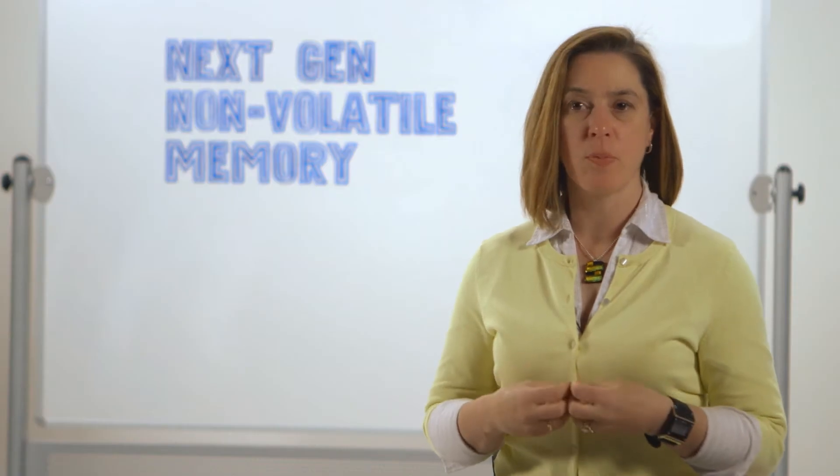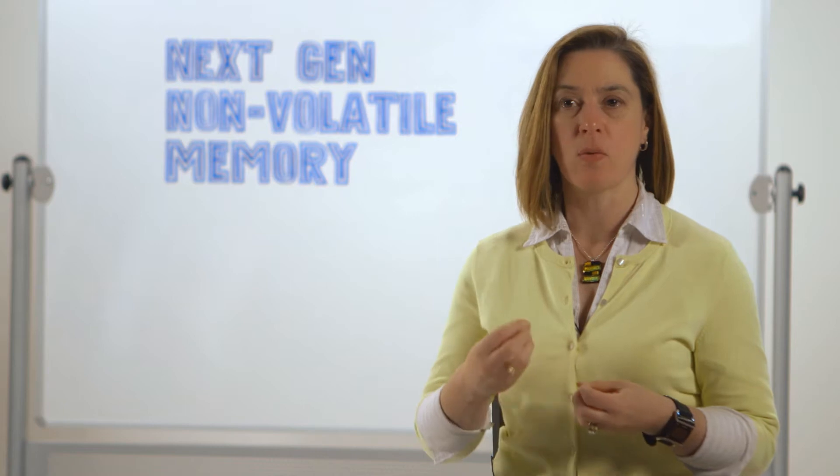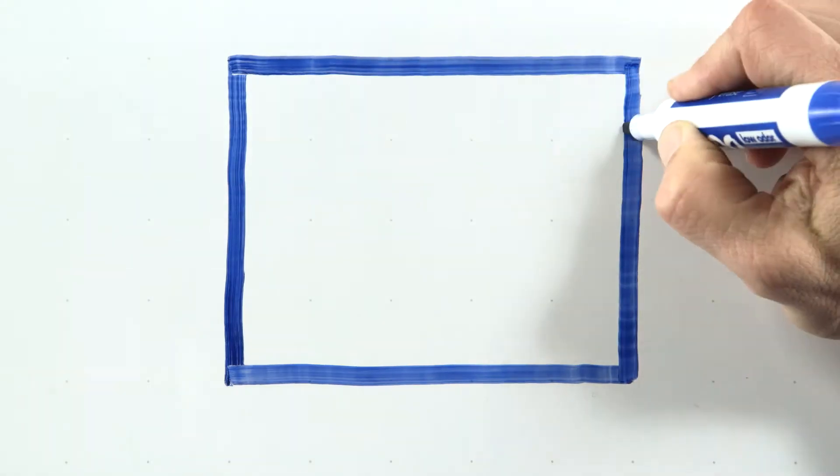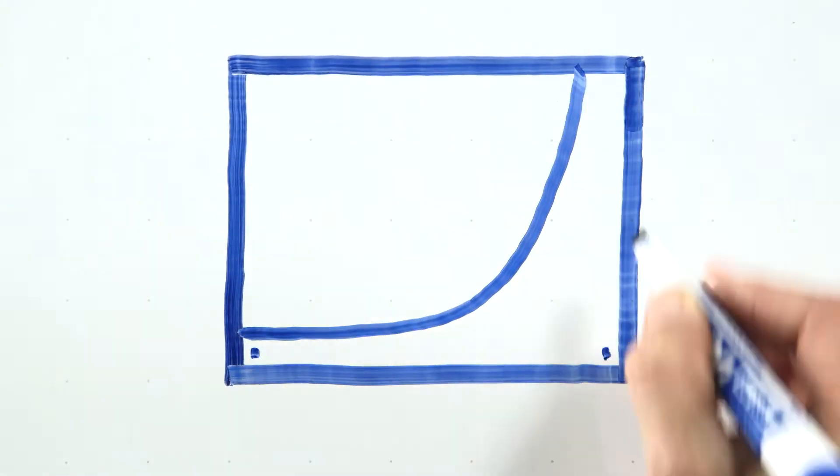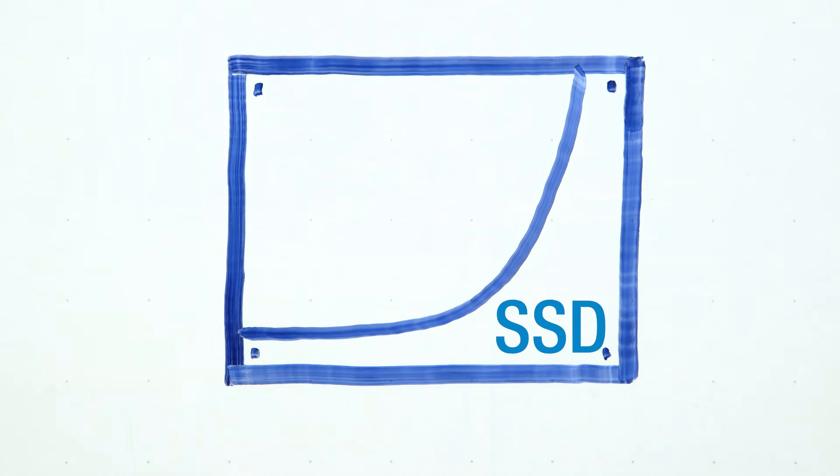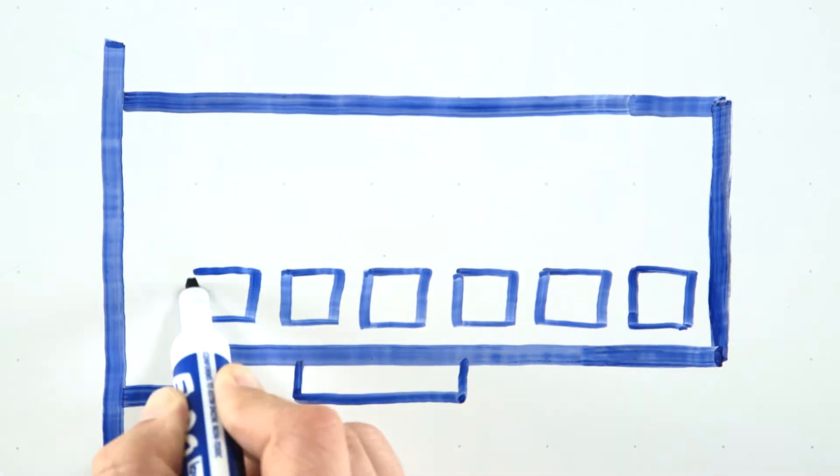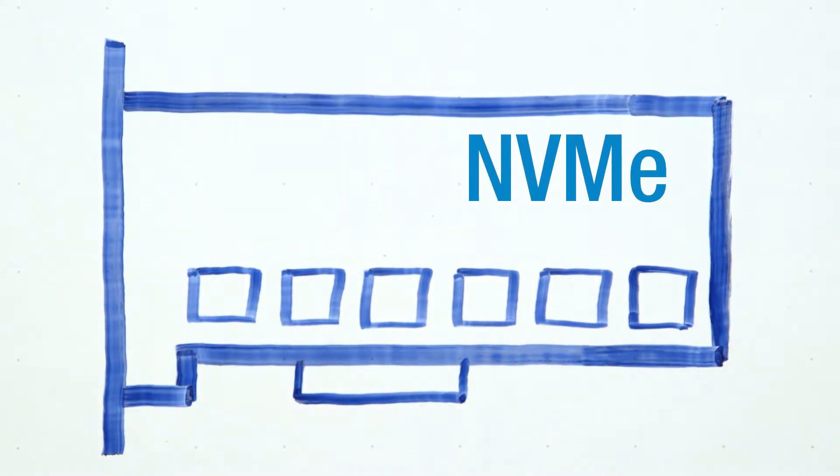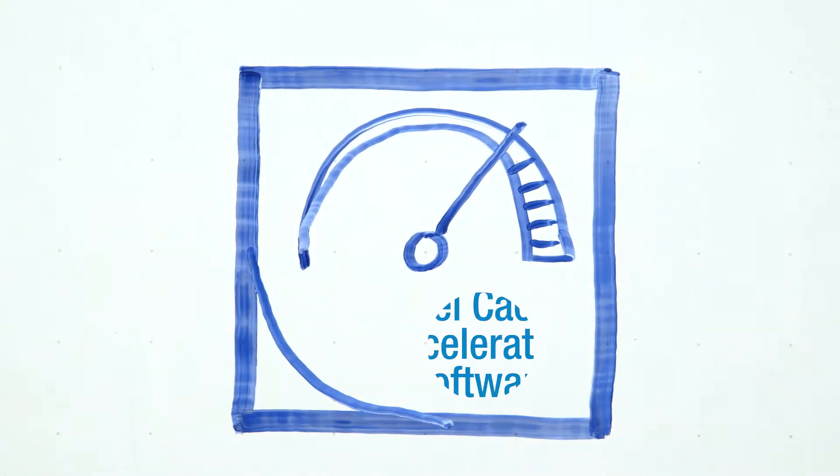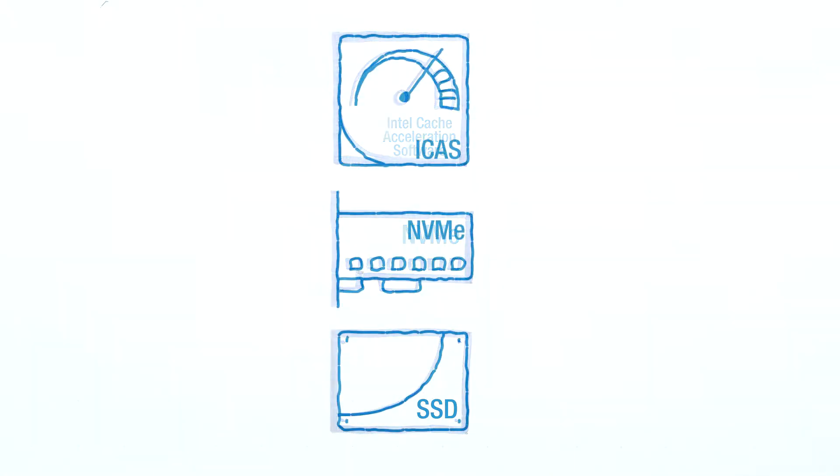There's three major contributions and components that we're putting forward in the industry. There's the Intel SSDs that are going to give you better endurance, higher resilience, better speed than a hard drive. On top of that, there's the NVMe interface that takes a lot of the latency out of it, so you're not waiting for data to move back and forth. And on top of that, there's the ICAS caching software. So all three of those building blocks together are the first step in that re-architecture of storage and memory.